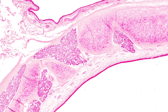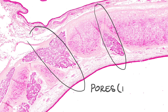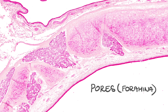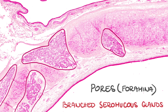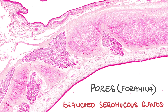Cartilage in the epiglottis has pores or holes inside. These foramina allow blood vessels and nerves to pass through the cartilage, which is important for the proper functioning of the epiglottis, for its nutrition and movement regulation. Besides vessels and nerves, in submucosal loose connective tissue there are also branched seromucous glands in these pores, and also around both sides of the cartilage.